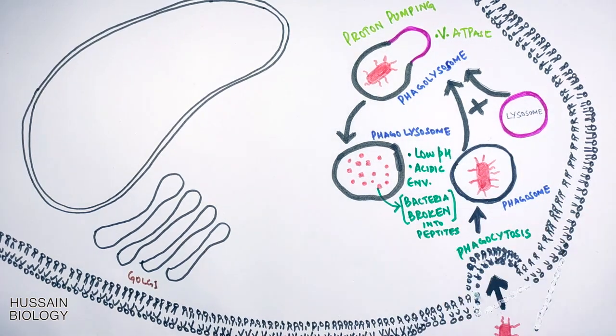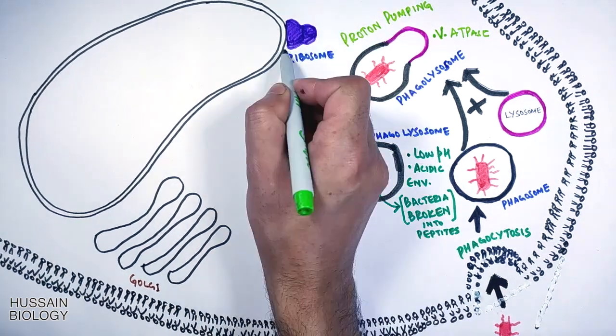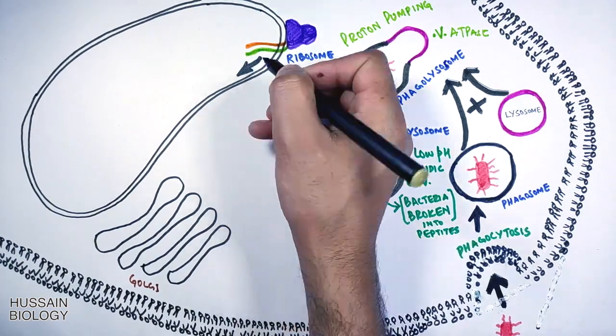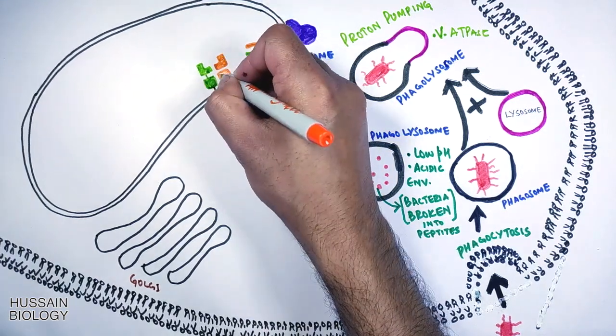Now let's pause it here and get to the endoplasmic reticulum. Here in the endoplasmic reticulum we see the ribosome produces both the light and heavy chains of MHC-II molecule. These chains are then stabilized into final structure of MHC-II by chaperones.